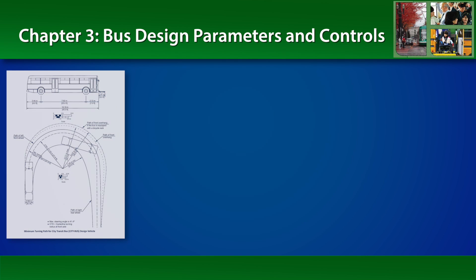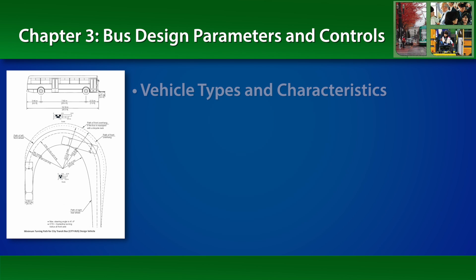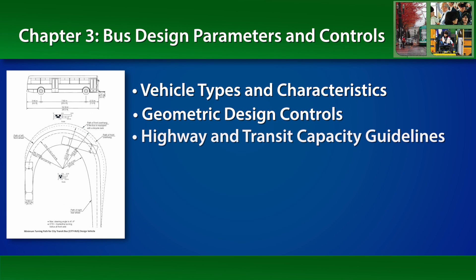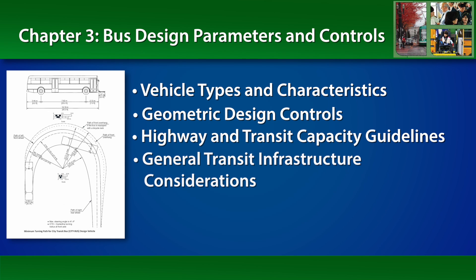Chapter 3 presents bus design parameters and controls, and describes vehicle types and characteristics, geometric design controls, highway and transit capacity guidelines, and general transit infrastructure considerations.